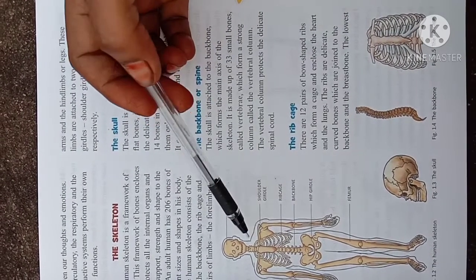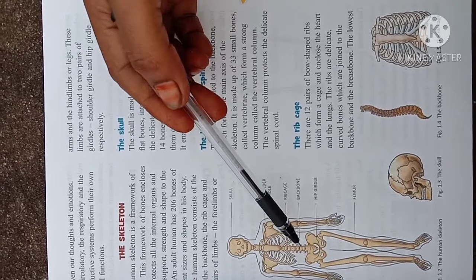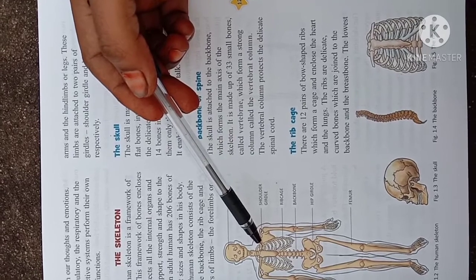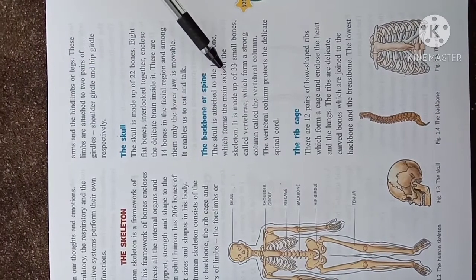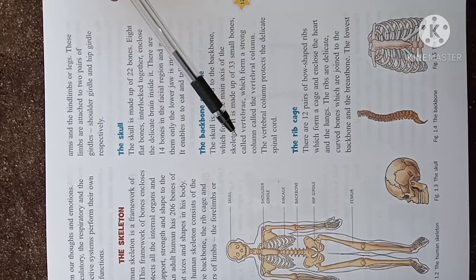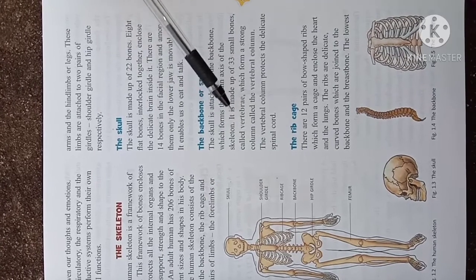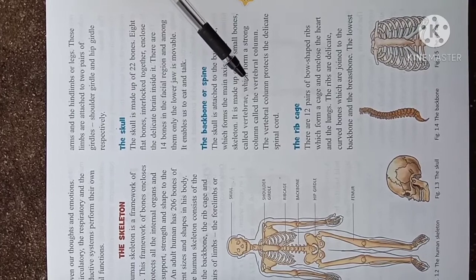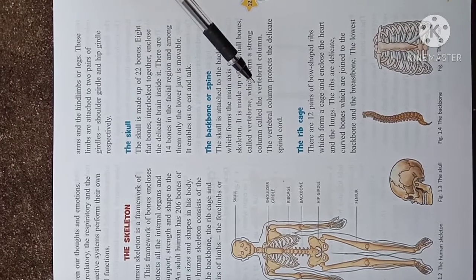It is made up of 33 small bones called vertebrae which form a strong column called the vertebral column. The vertebral column protects the delicate spinal cord.